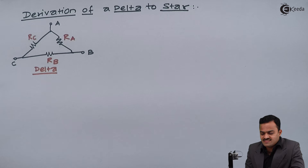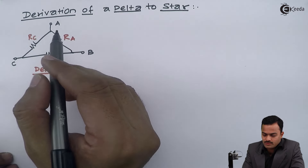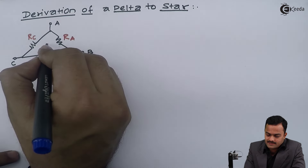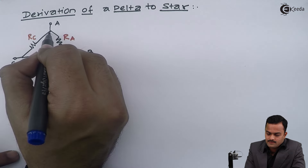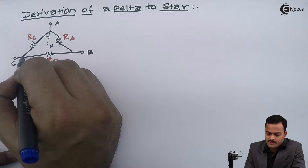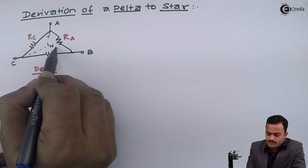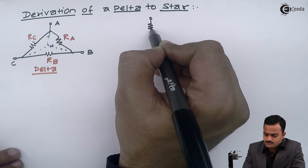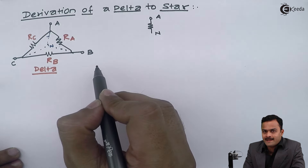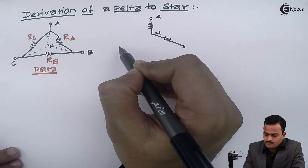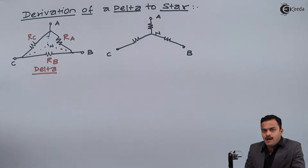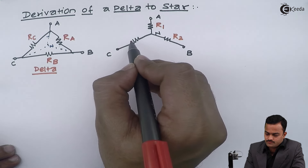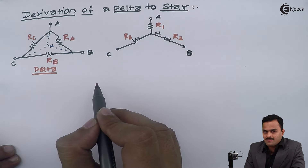This delta I have to convert into equivalent star. I will first draw how the star will look like — one more point will get added. Let's take this point as N, and then between A and N I will have one resistor, between C and N one more resistor, and between N and B a third resistor. This new point N gets added in the star, and I will give the names R1, R2, and R3 which is the equivalent star of this delta.